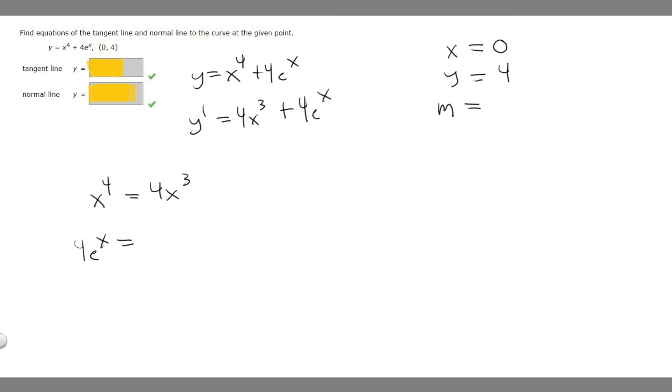Now that we have that, we can plug in our x value to find our slope. Our x value is 0. So y prime of 0 equals 4 times 0 cubed plus 4e to the 0. 4 times 0 cubed is just 0, and e to the 0 is 1 because anything to the 0 is 1. So 4 times 1 is 4. Our slope at 0 is 4, so now we know our slope is 4.